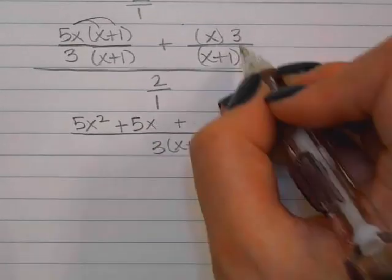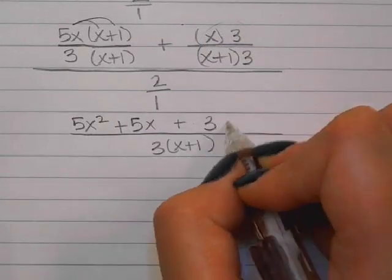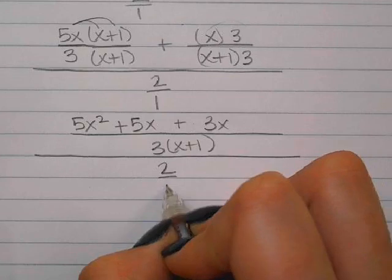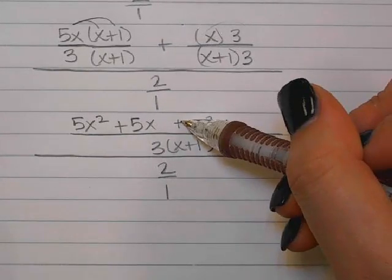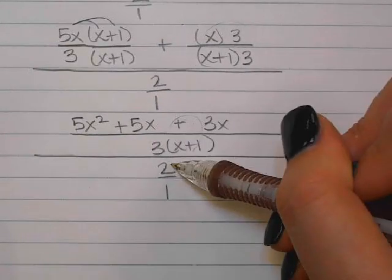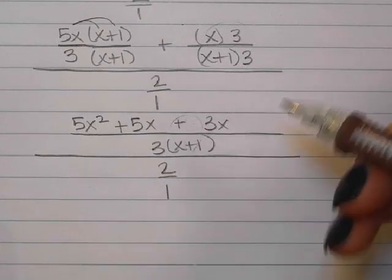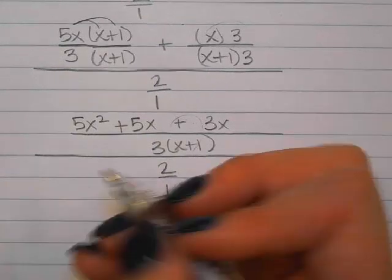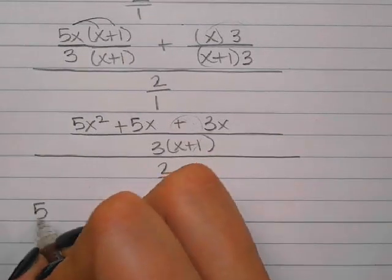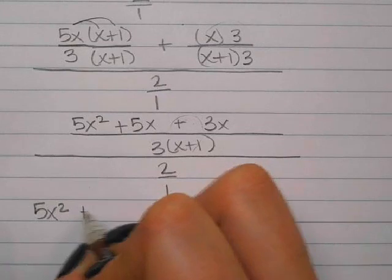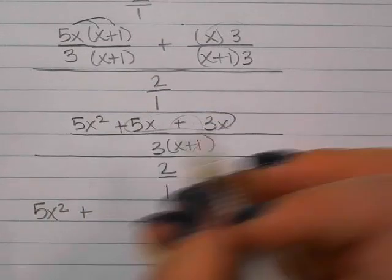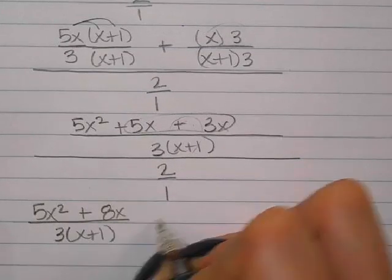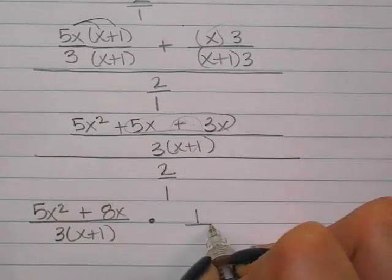I have plus 3x, and that's all divided by 2 over 1 — because I can write any whole number as a fraction with a 1 underneath. So now I have a fraction over another fraction, which means it's a division problem. I'm going to do keep it, change it, flip it.